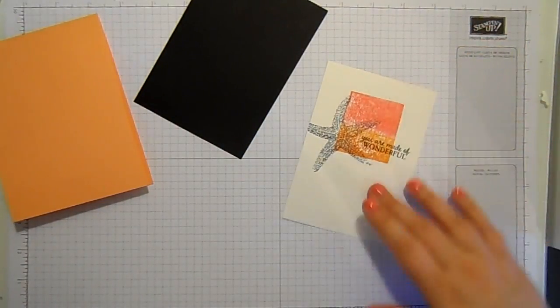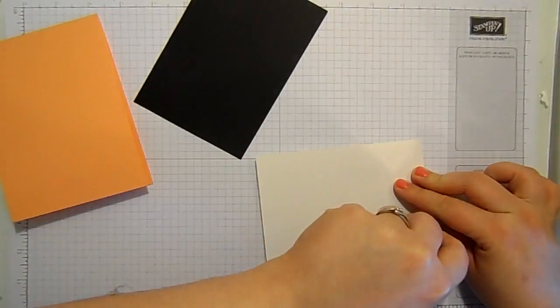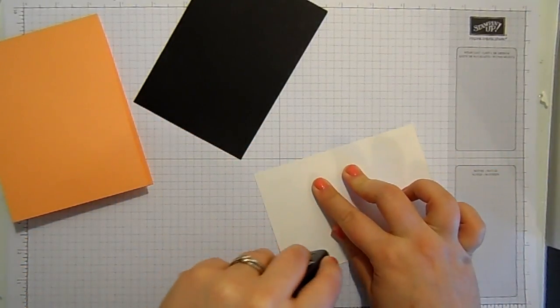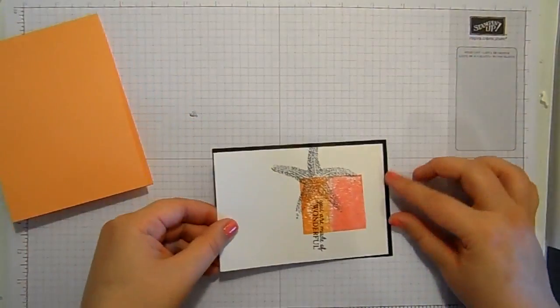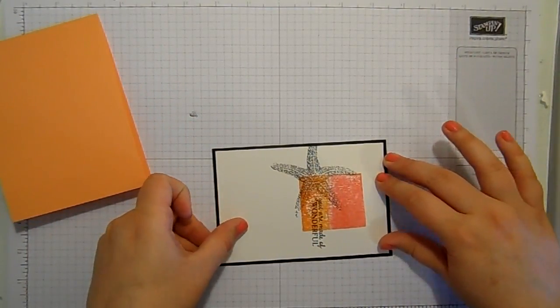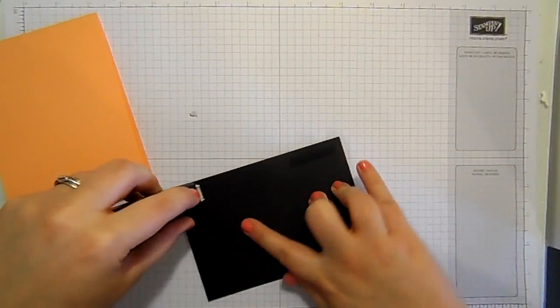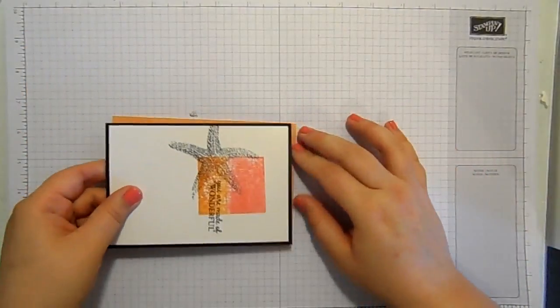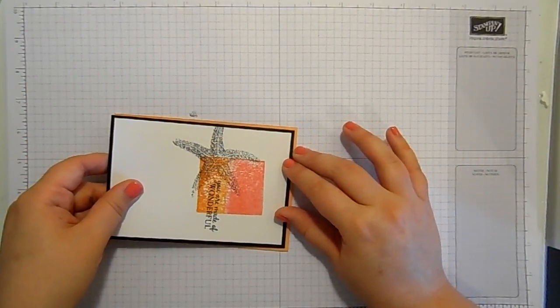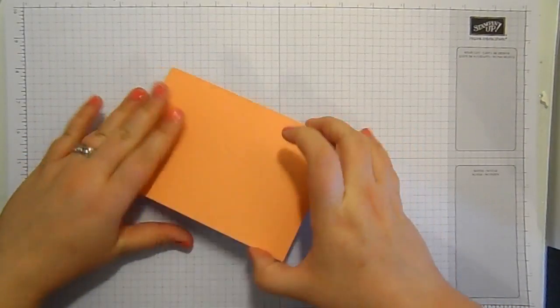And then we're just going to layer it up. And isn't that really cool? I think I'm actually going to have to add a couple of enamel shapes onto this. I'm going to get it layered up and I'm going to have a look. I have got a bit of an enamel shape obsession at the moment. Anybody else? Just a little bit obsessed. They're so pretty. And I'm going to layer this up completely flat. You could put dimensionals in between, but I'm going to keep this one really flat and easy to post.